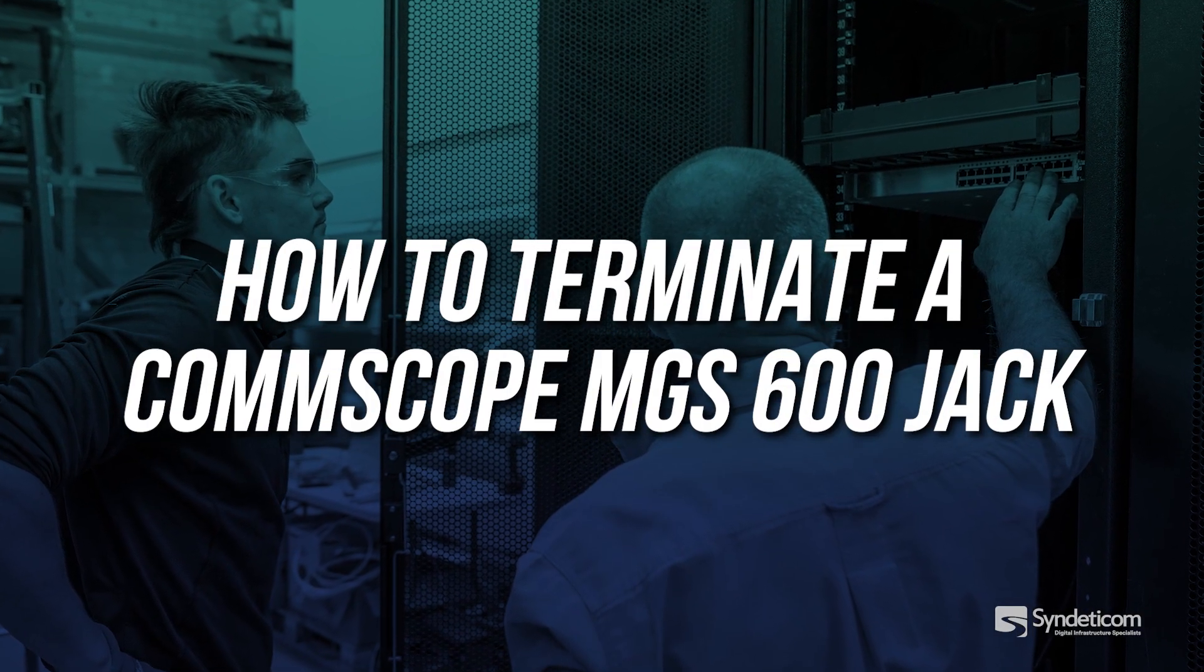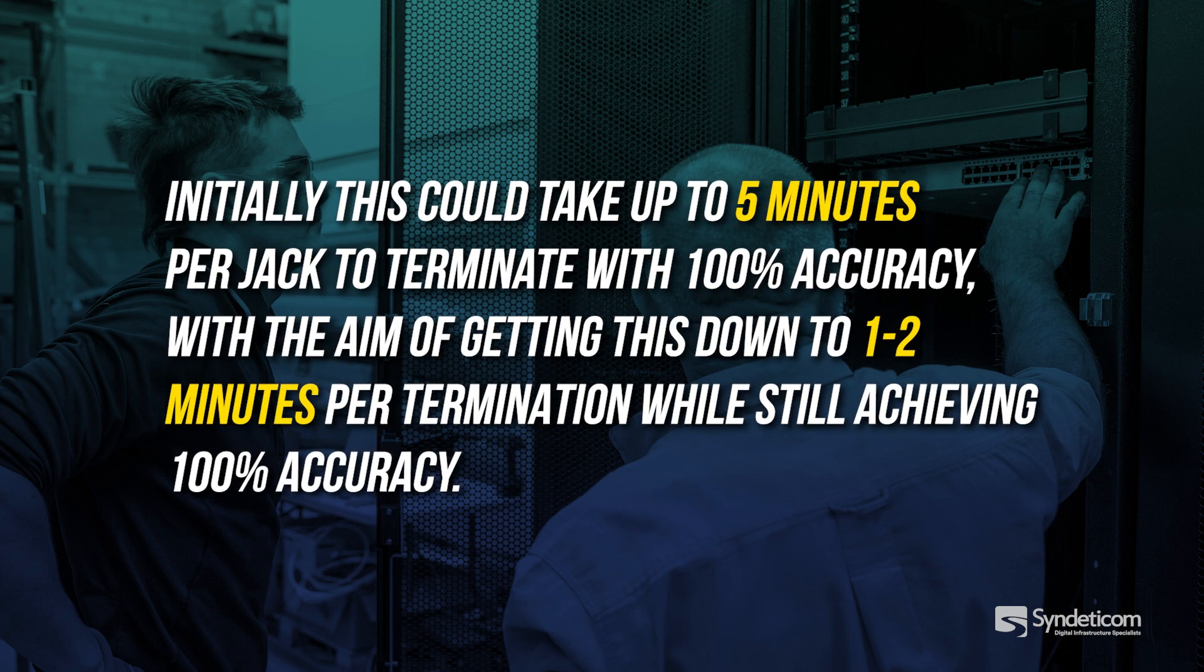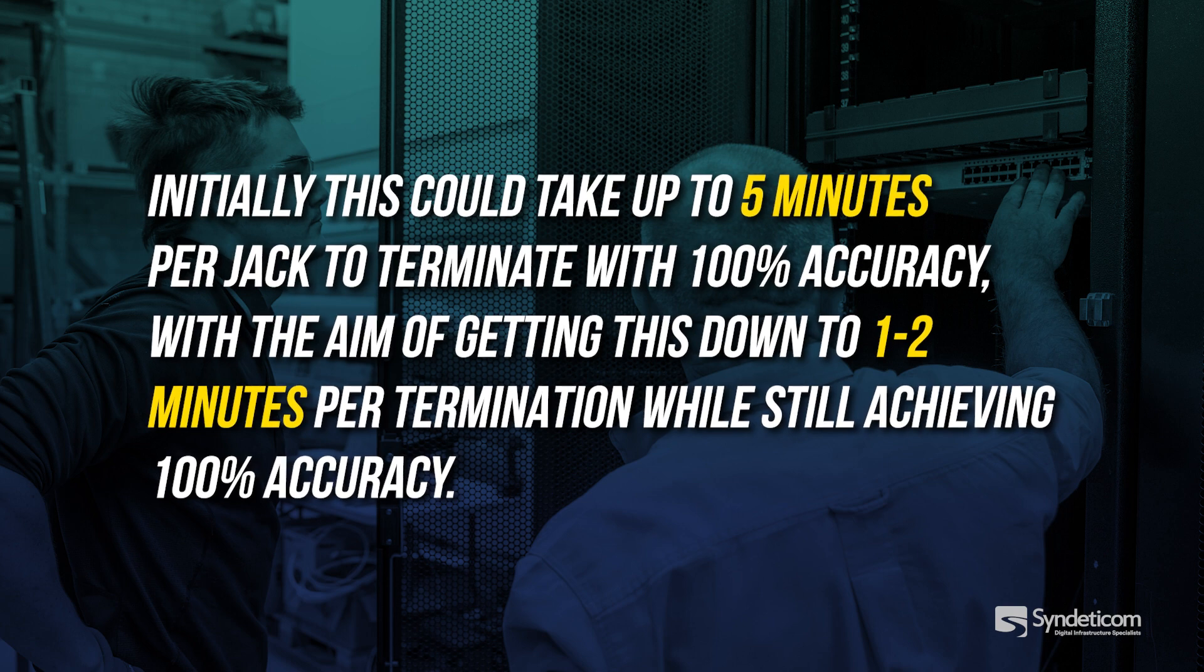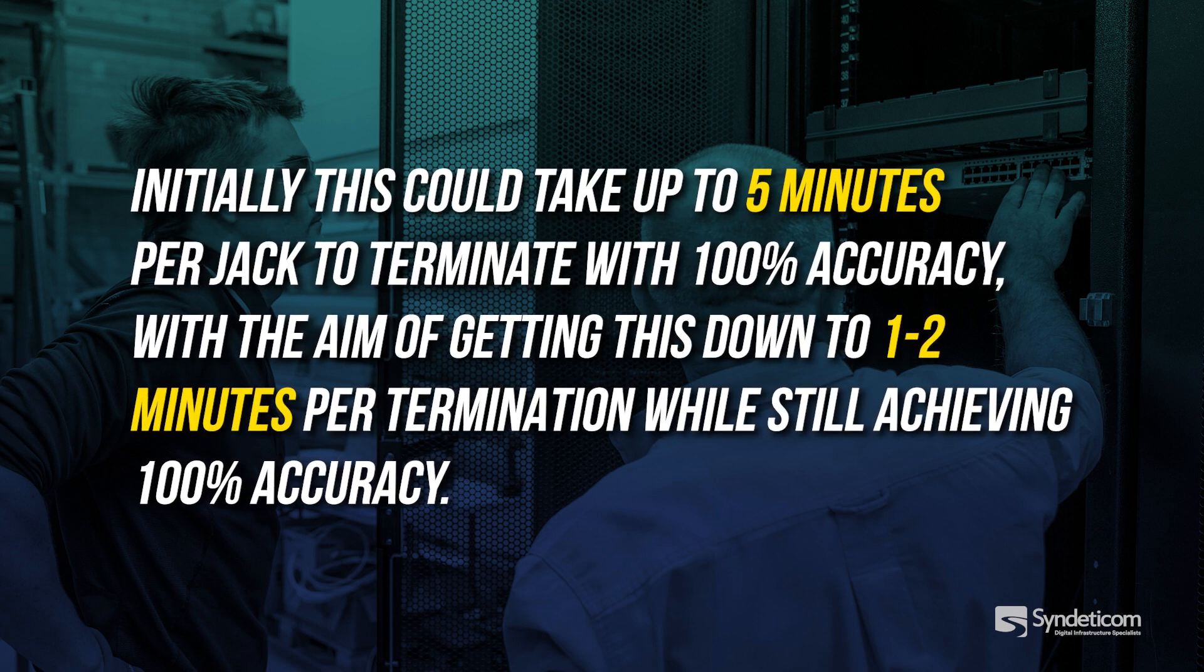Terminating a CommScope MGS 600 jack. Initially this could take up to five minutes per jack to terminate with 100% accuracy, with the aim of getting this down to one to two minutes per termination while still achieving 100% accuracy.